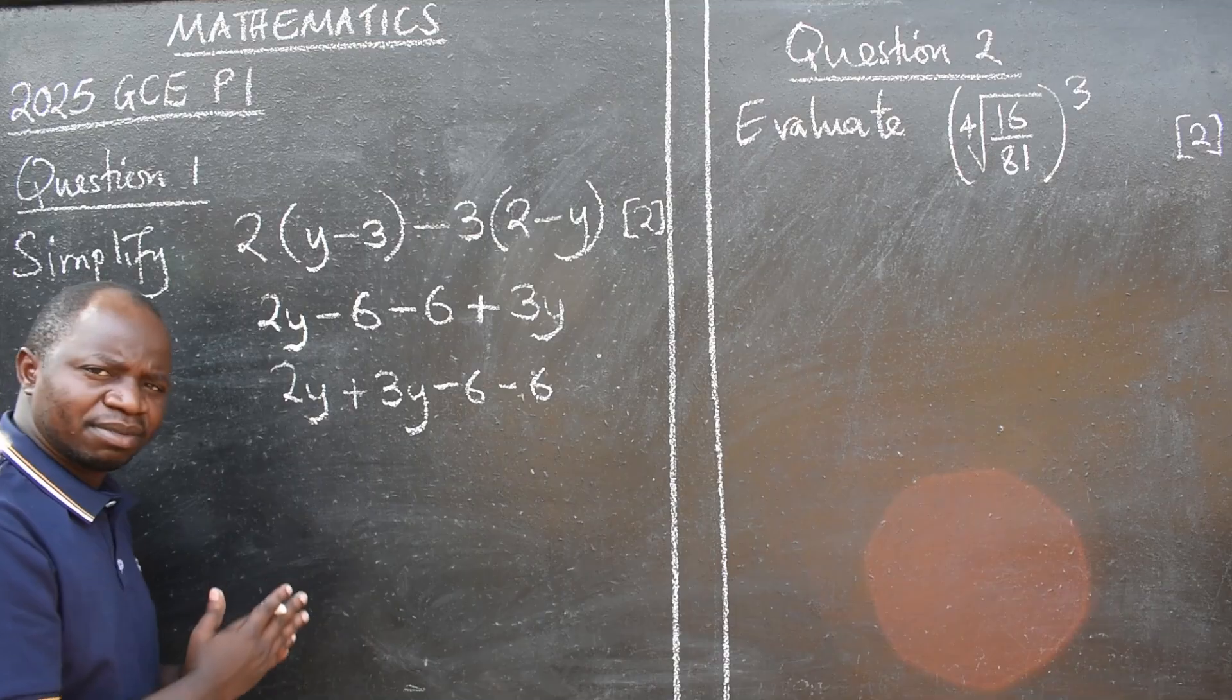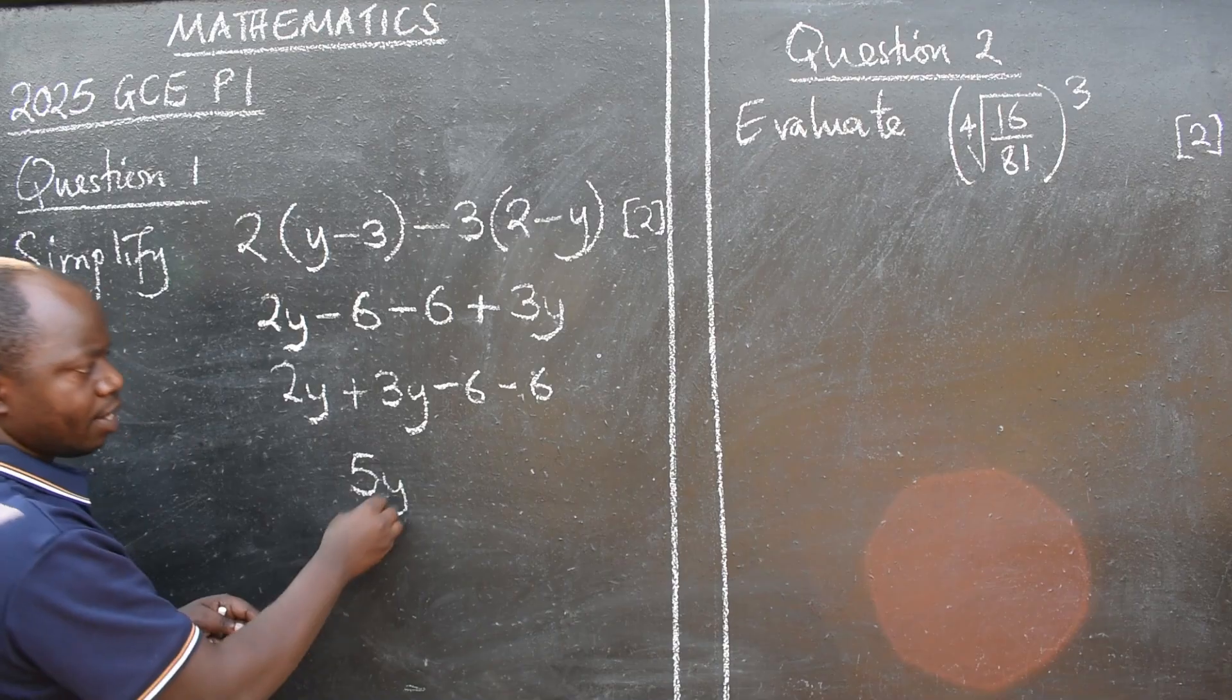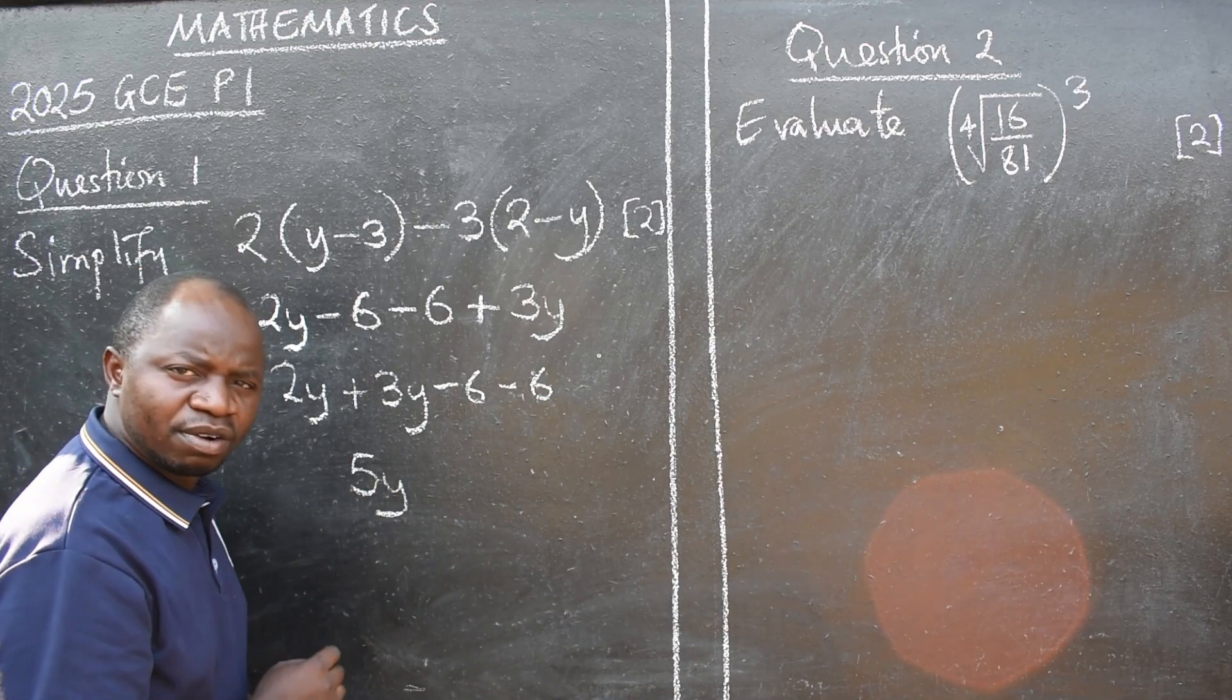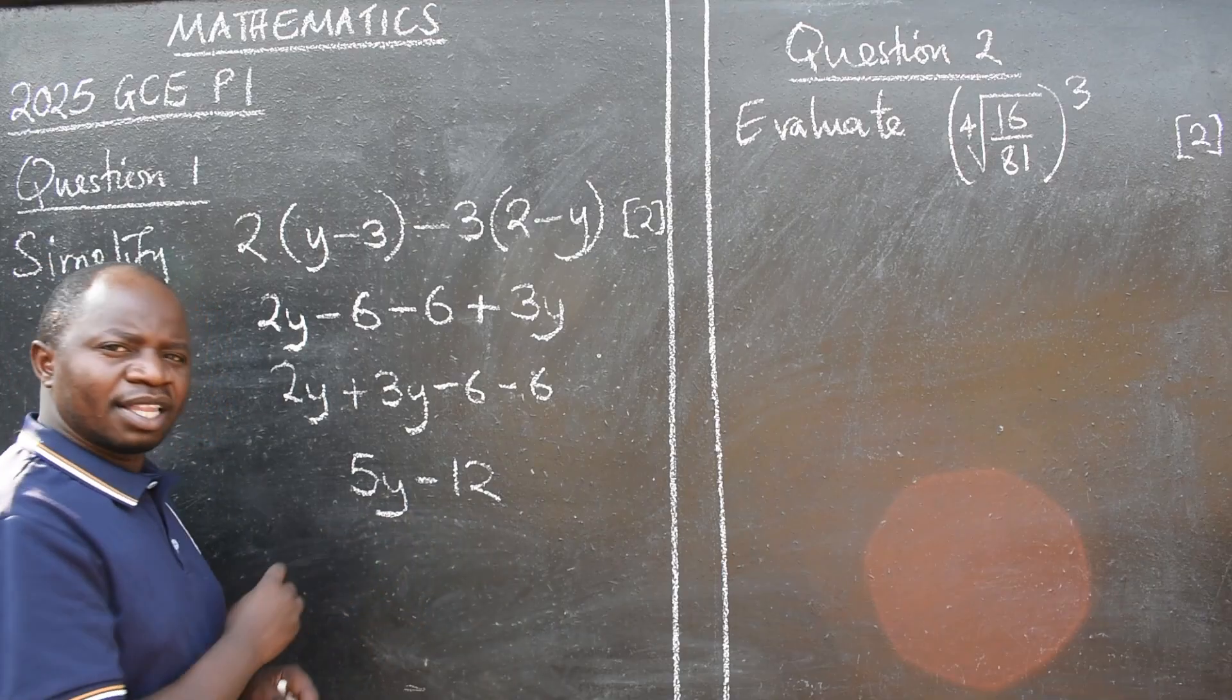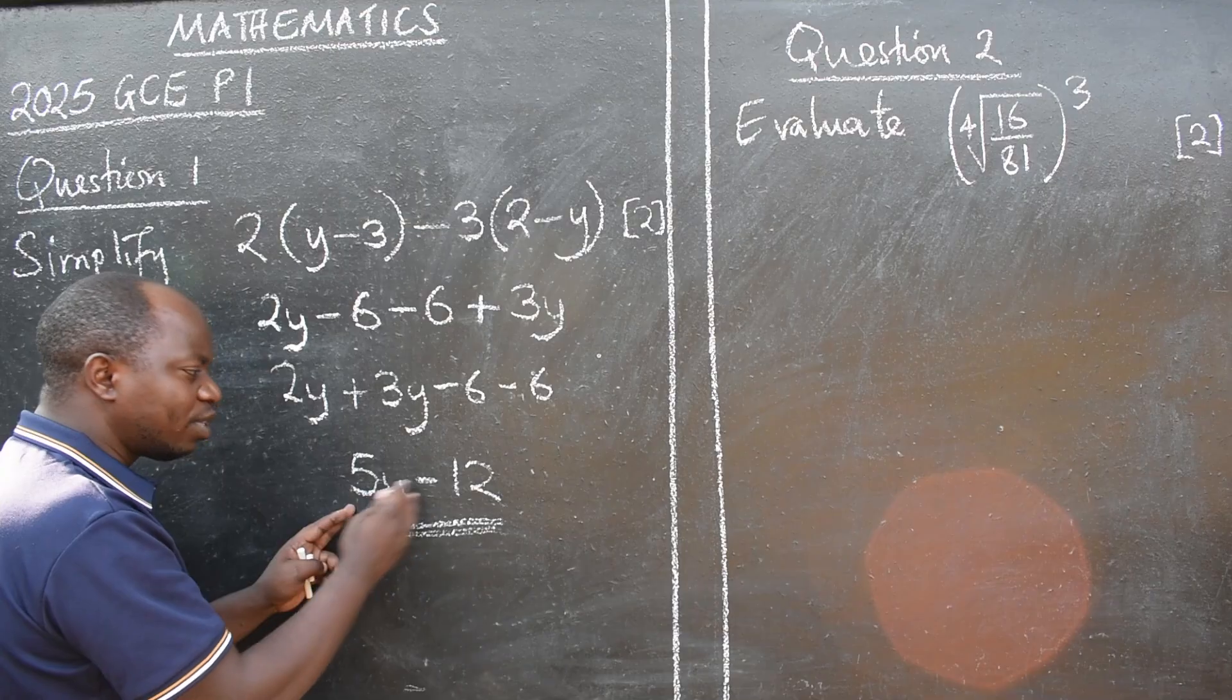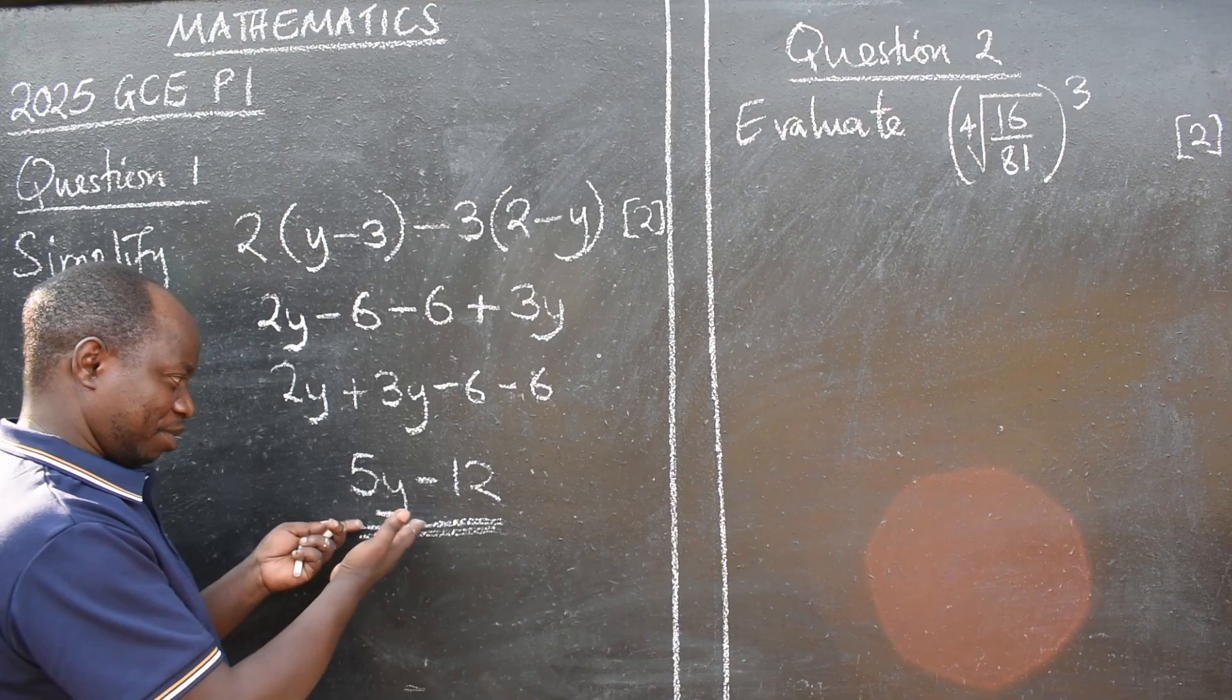Like terms. Algebra says like terms can be added or subtracted. So these we are adding. They are like terms. So two plus three will give us five y. Then, same signs here. Negative, negative. It means you are supposed to add. Six plus six gives you twelve. And the sign involved is minus. So minus twelve. What do you do at this stage? This is the final stage. This is the final answer. Why? These are not like terms. There is no y here. So they are not like terms. It means you cannot subtract. That is what we are expecting the 2025 GCE candidates to give us.